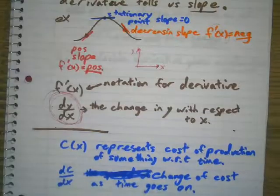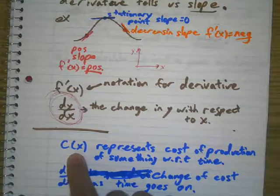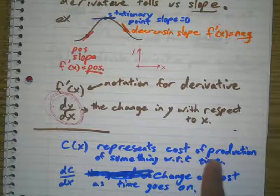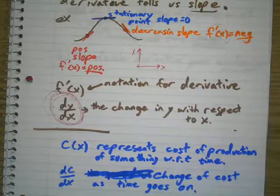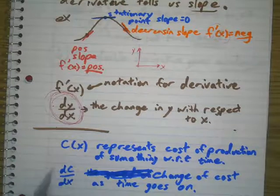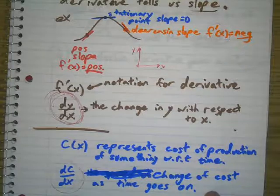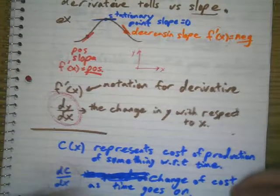So if like my function was c of x, this represents the cost of production of something with respect to time, or this would be the change of the cost with respect to time. Let's move on. I have a better example.